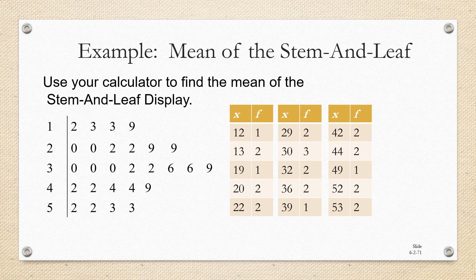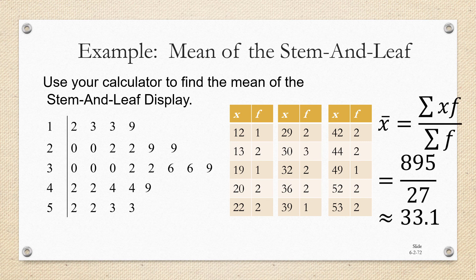Now remember the formula if you're using a frequency distribution and you're doing it by hand is you're going to take the sum of the products of x times f and divide it by the sum of the frequencies. So I've gone through and multiplied each of the products x times f and added those products together and we got 895.